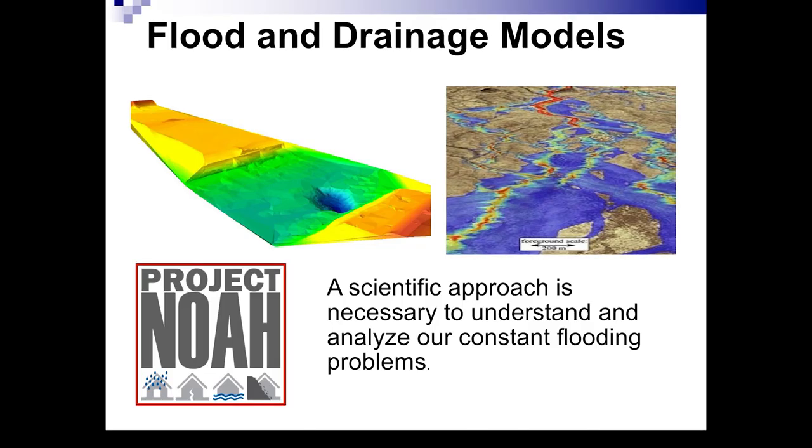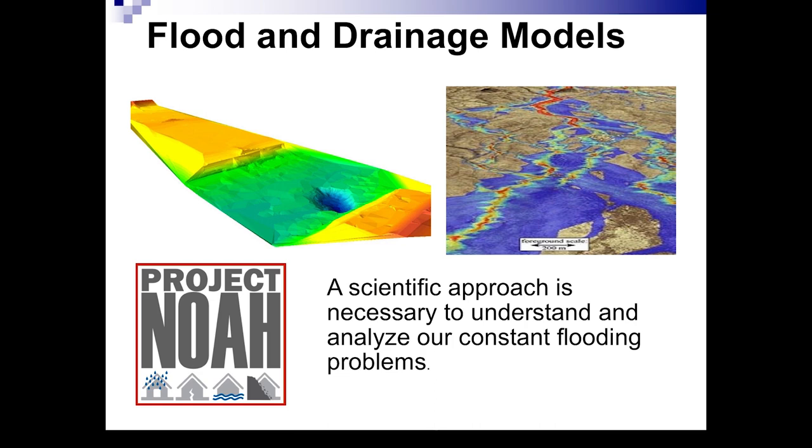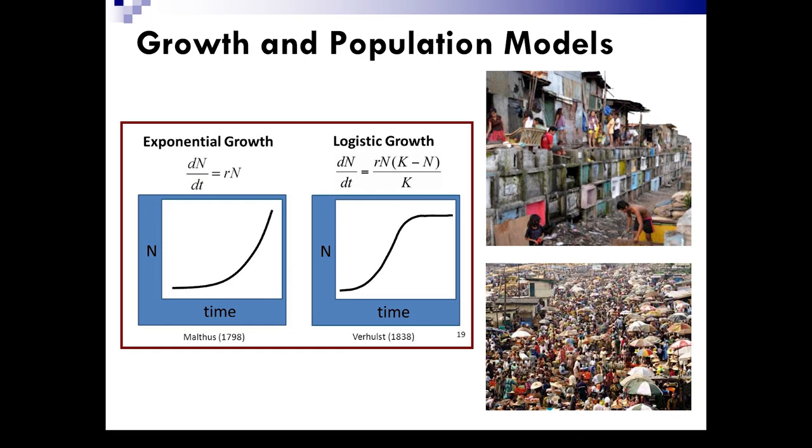This process is a very scientific approach that is necessary to understand and analyze these huge problems. Our population problems, due to overpopulation, can be studied mathematically. We need mathematics because populations really have to be observed over long periods of time, which is physically impossible to do. Therefore, you need to do a lot of these theoretical computations and predictions.